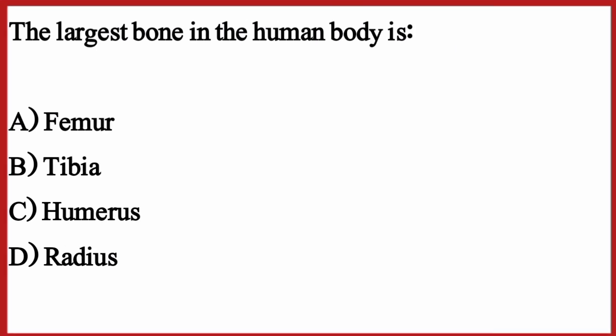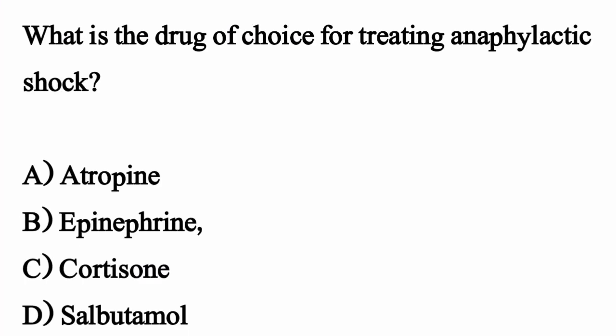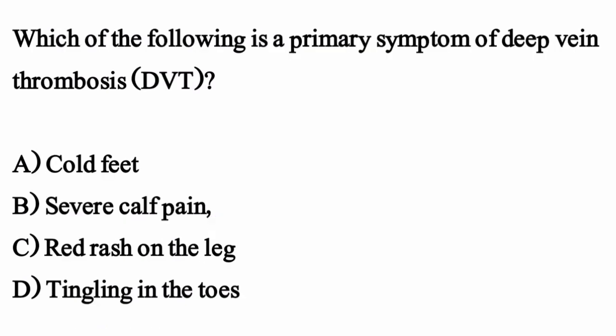The largest bone in the human body is — the correct option is option A: Femur. What is the drug of choice for treating anaphylactic shock? The correct option is option B: Epinephrine. Which of the following is a primary symptom of deep vein thrombosis? The correct option is option B: Severe calf pain.